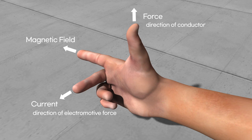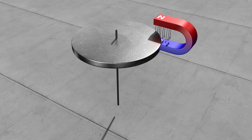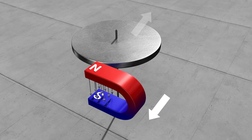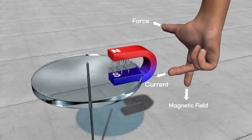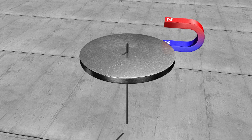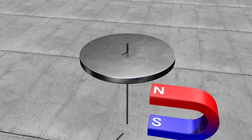Fleming's right-hand rule seeks to identify the direction of the electromotive force. The direction of the force indicates the direction of the motion of the conductor that breaks the magnetic flux. So when the magnet moves, the disc will move in this direction and break the magnetic flux. The direction of the force will head this way. Since the direction of the force and the direction of the magnetic field move this way, the electromotive force will head towards the center of the disc. In other words, current will flow from the outer edge of the disc to the center.